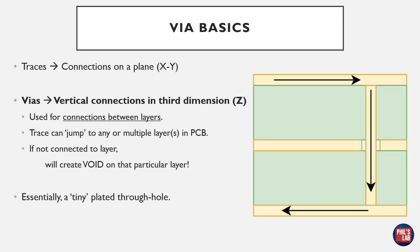Let's start off with via basics. Traces are connections on a plane — on a layer we can route anywhere and that's called a trace, or we can use copper pours. However, once we want to route between layers, for example connecting layer 1 to layer 3, we need to use a via. Essentially it's just a vertical connection in the third dimension. Our trace on one layer can jump to any or multiple layers. If we're not connecting to a certain layer, we create a void — an anti-pad in the layer we are passing through.